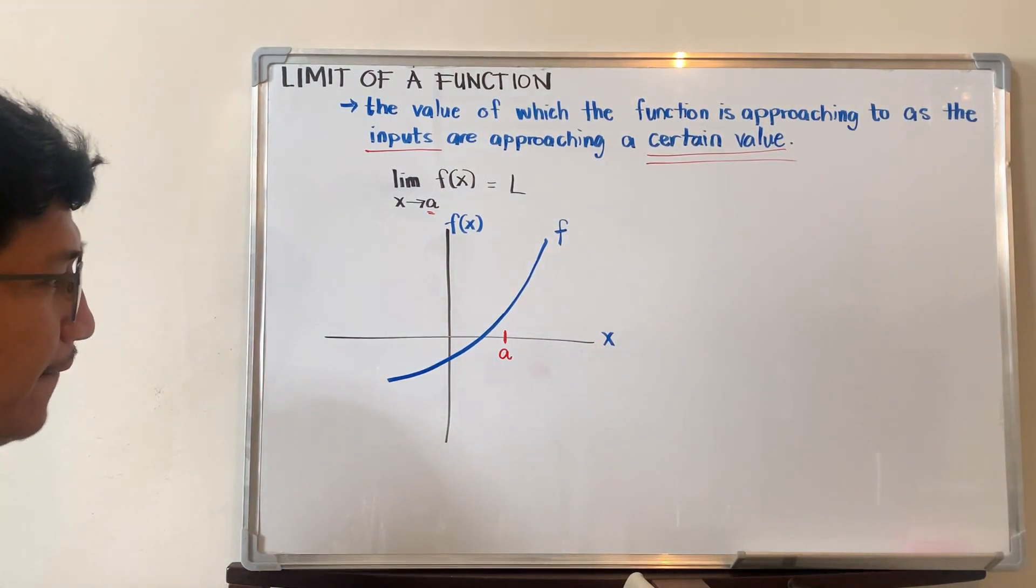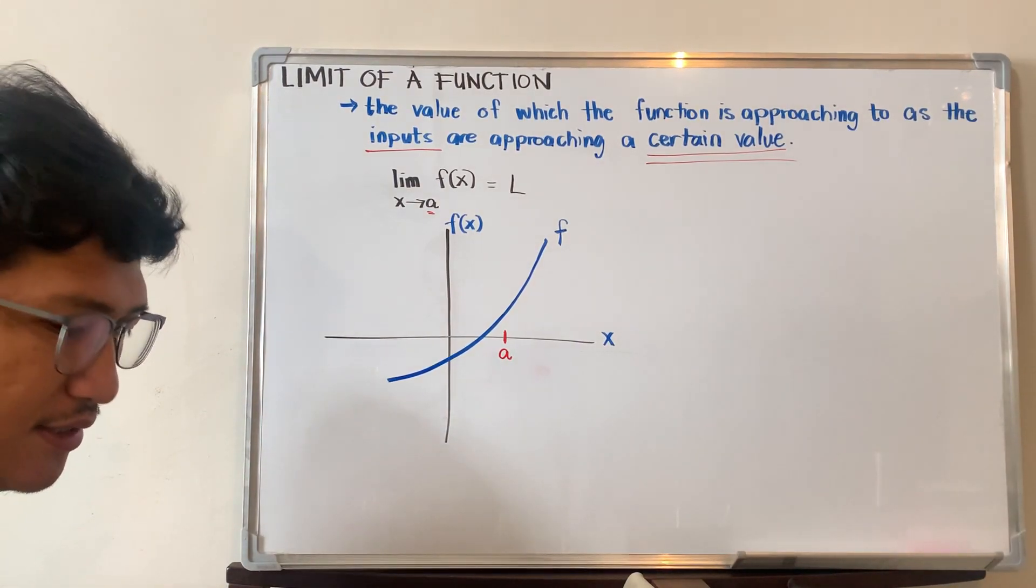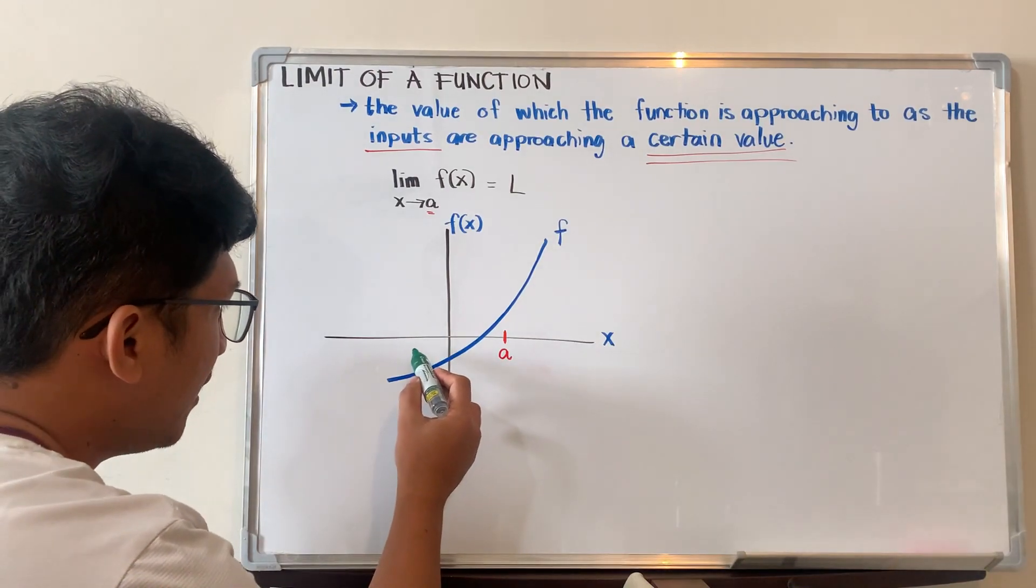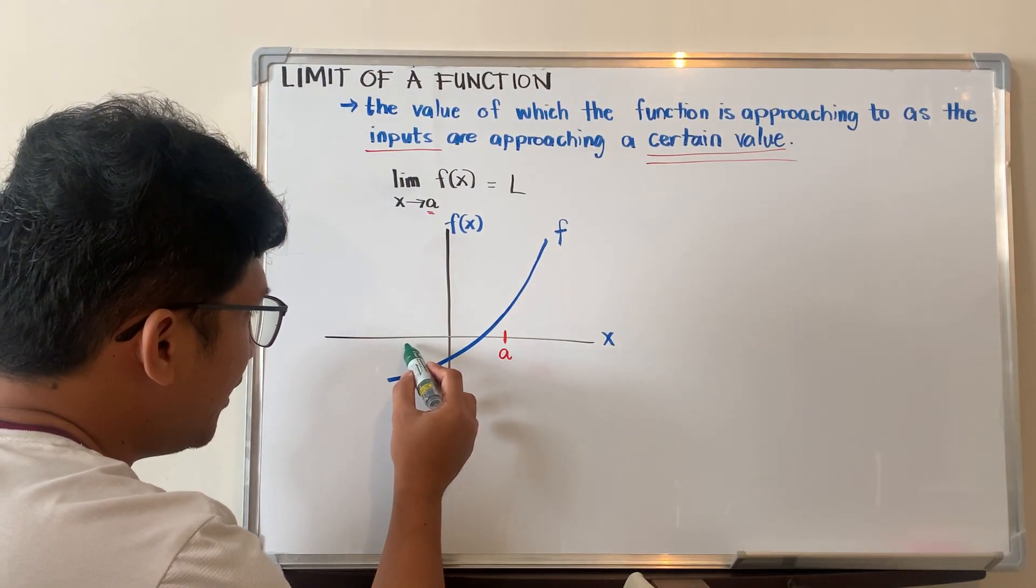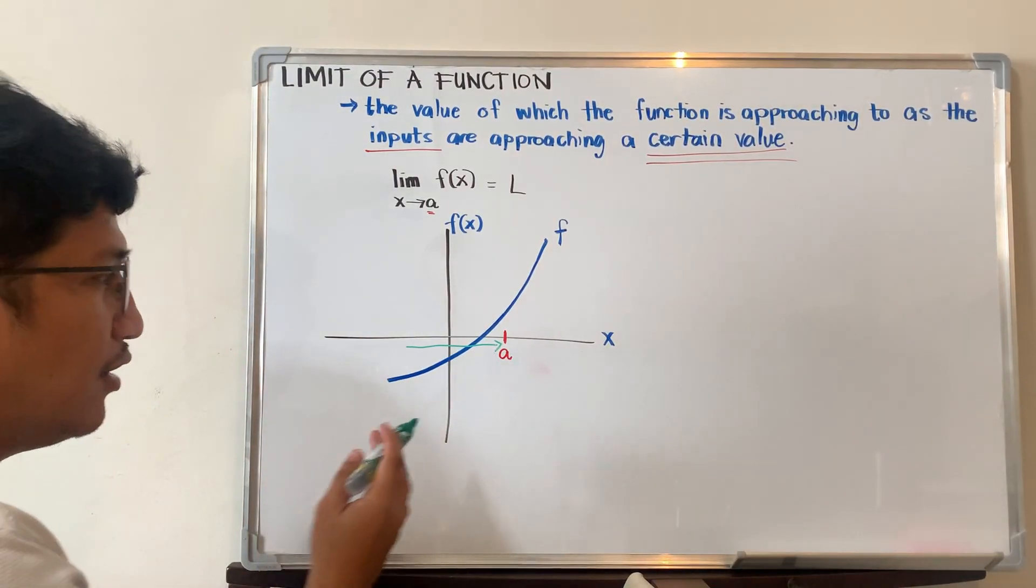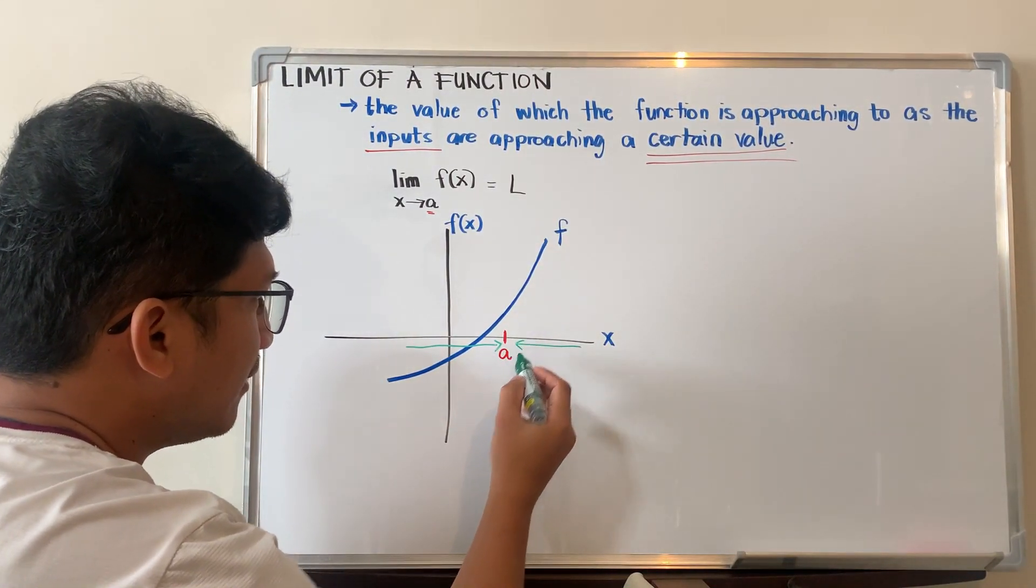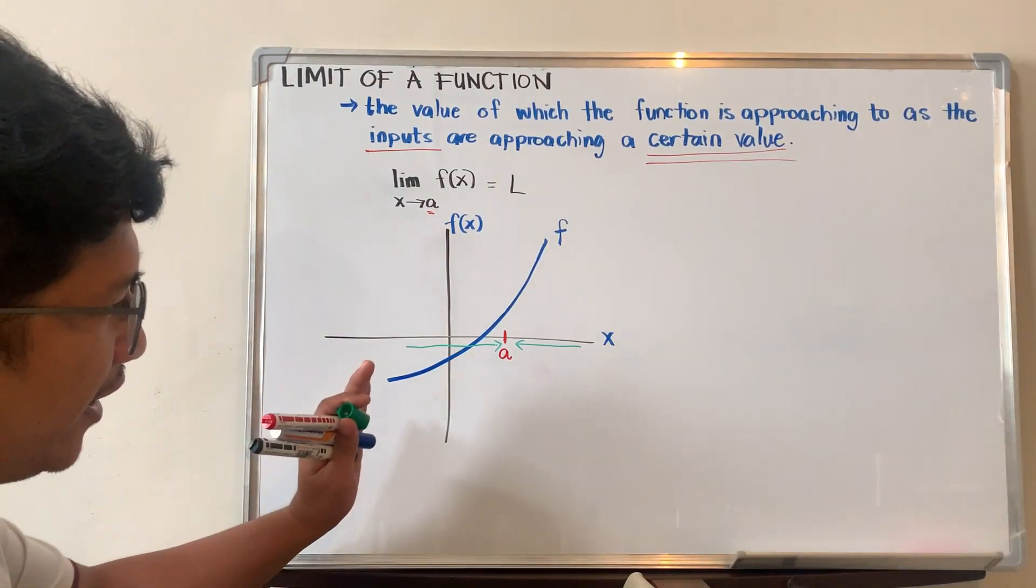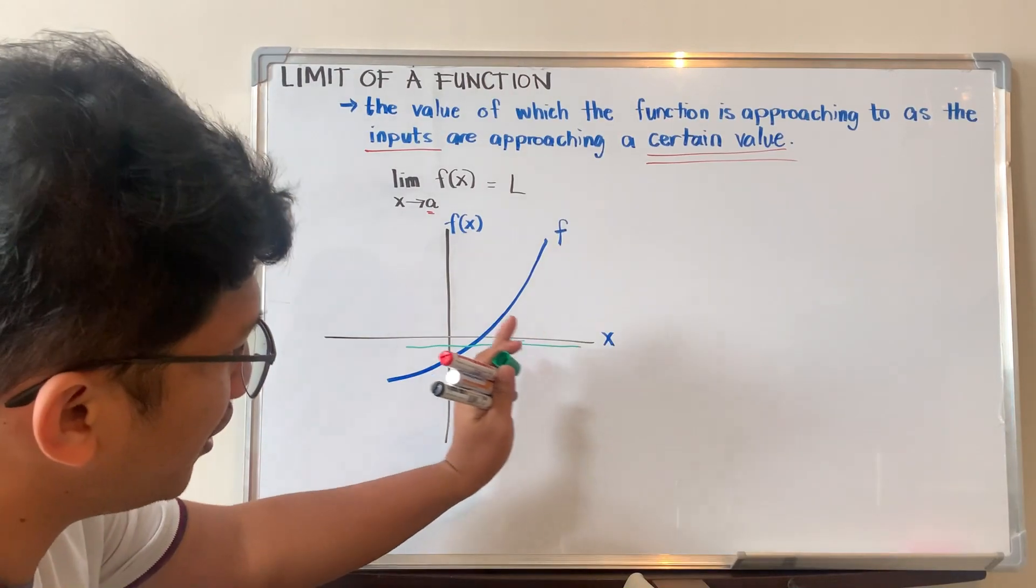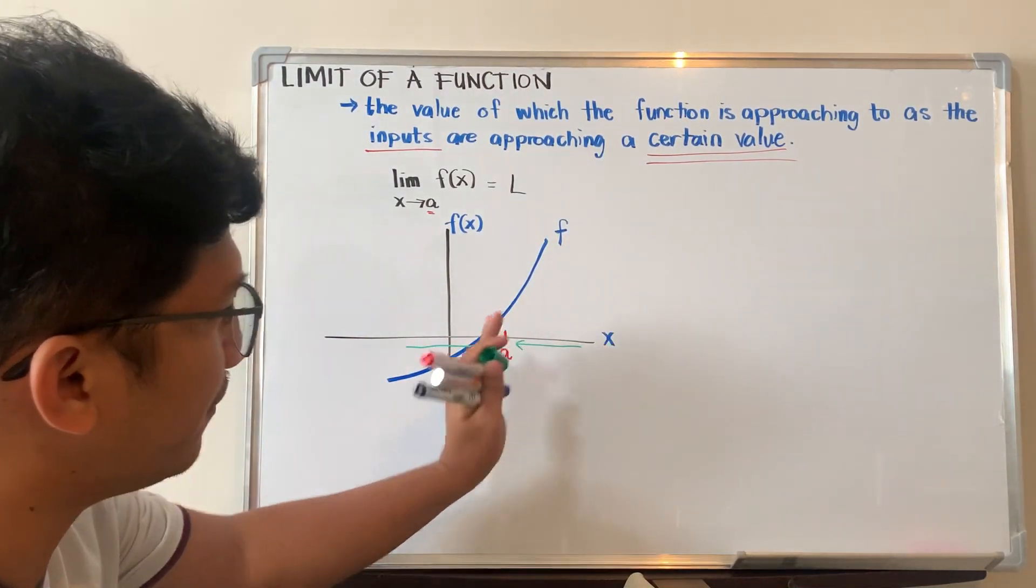The inputs, which is x, will approach a certain value, which is a. Now, there will be two scenarios. It could be that the value of x, or the inputs, will be approaching a from the left, or it could be from the right.